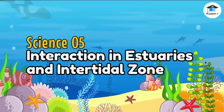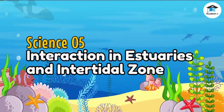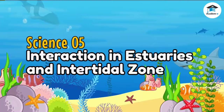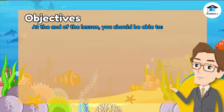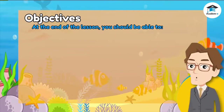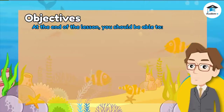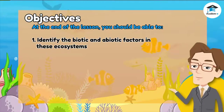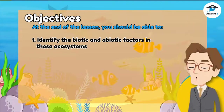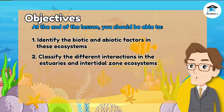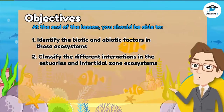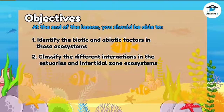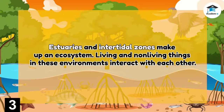Science 5: Interaction in Estuaries and Intertidal Zones. At the end of the lesson, you should be able to identify the biotic and abiotic factors in these ecosystems and classify the different interactions in the estuaries and intertidal zone ecosystems.